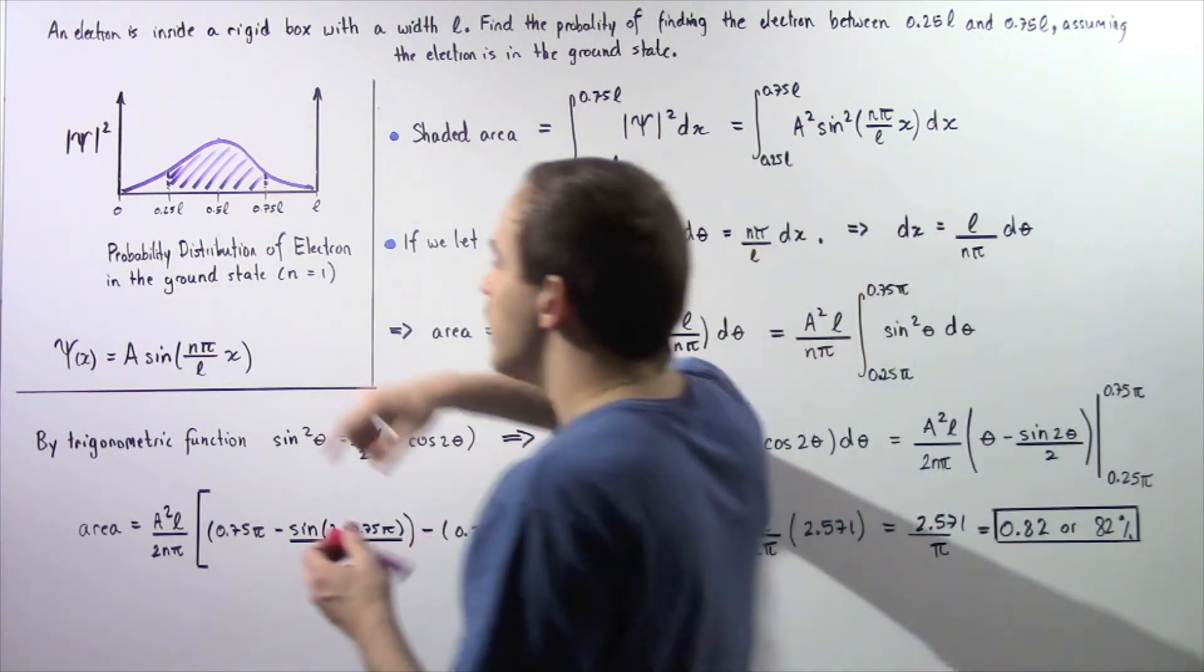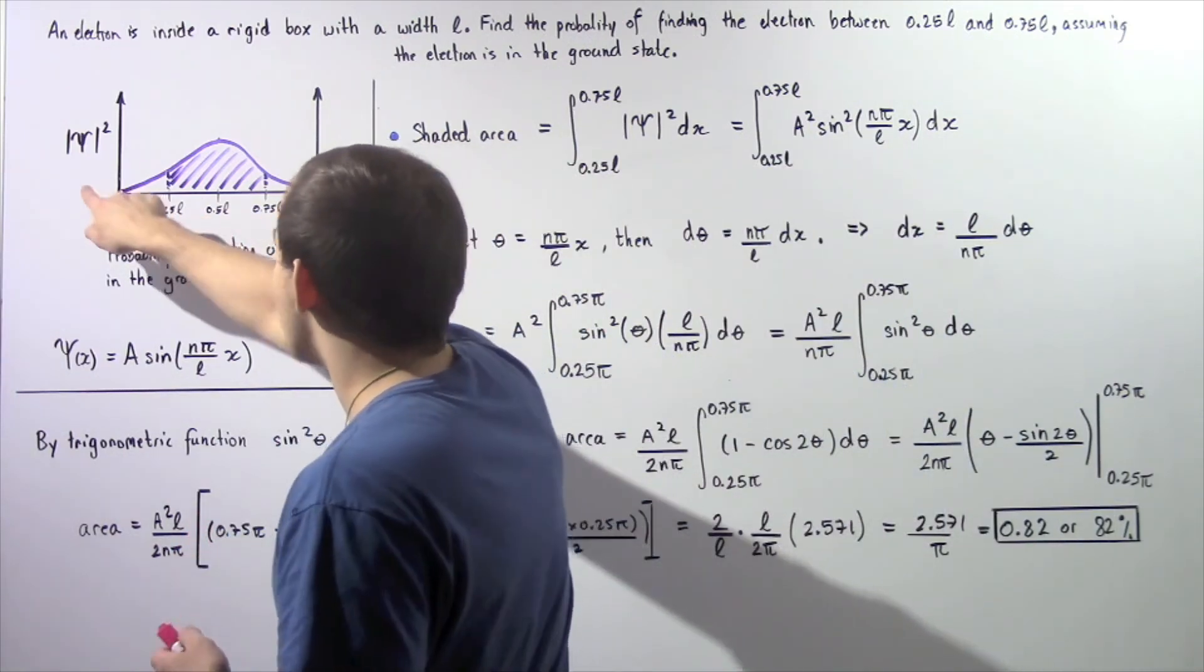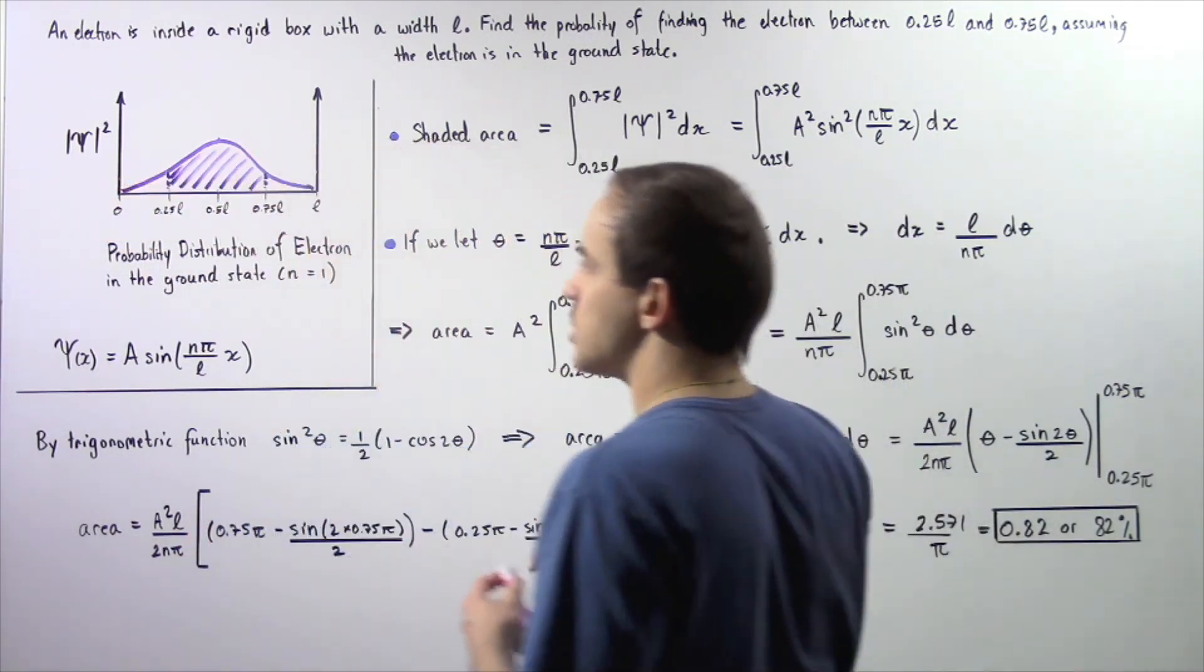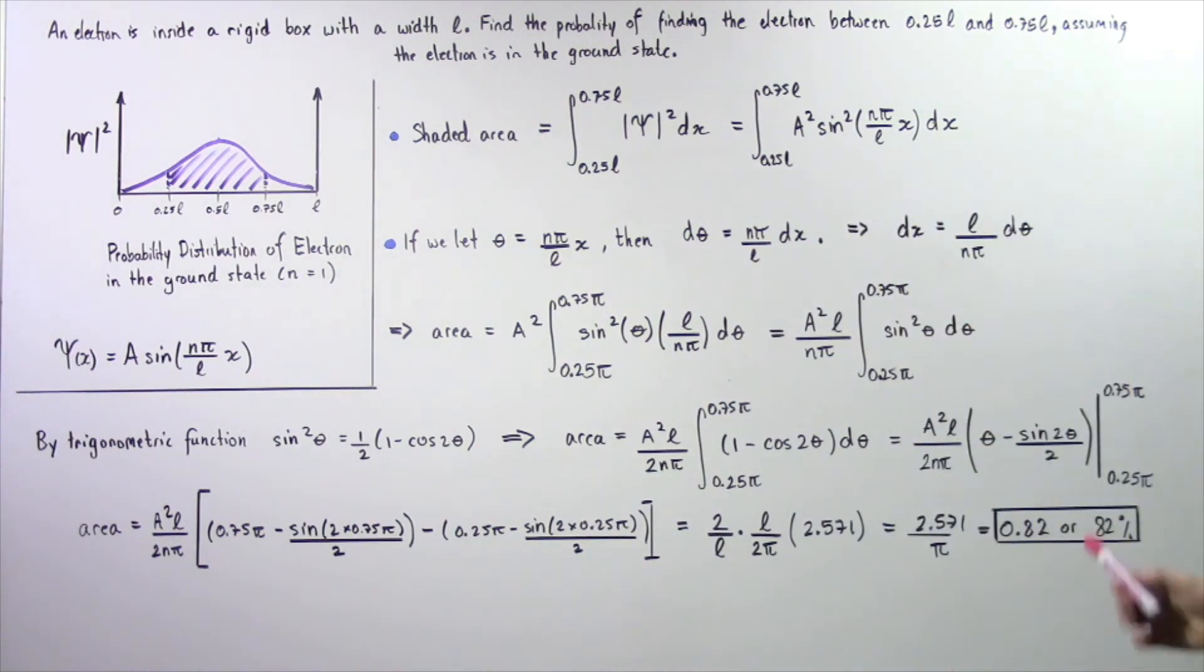That gives us about 0.82 or equivalently 82%. So the probability or percentage of finding our electron between these two points along the bottom portion of the rigid box is 82%.